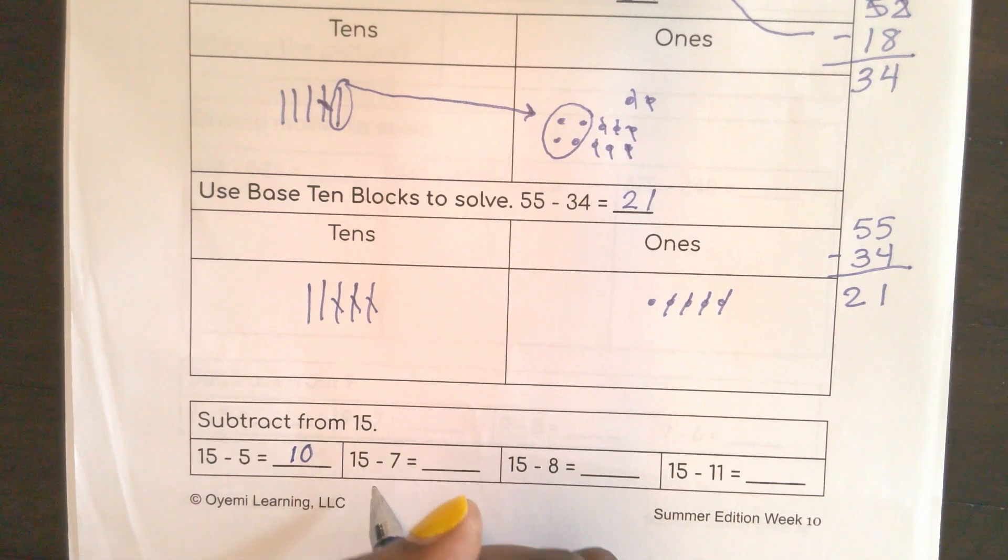15 minus 7. I want to take away 7. So let's just start by taking away 5 from the 15. So if I take 5 away, then I would end up with 10. And then I could take 2 away and I would end up with 8.